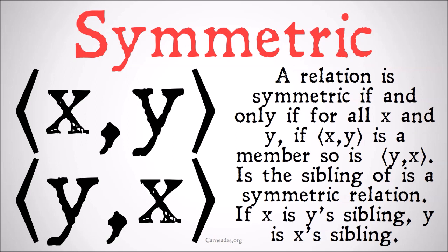This doesn't have the same need to focus on scope as the reflexive relation, because we're talking about for all xy that are already a member, so that will usually define the type of thing we're talking about with a given relation.